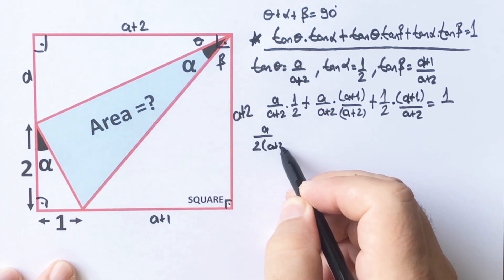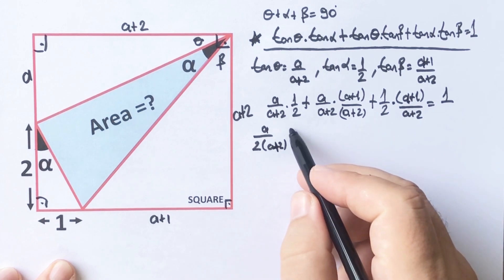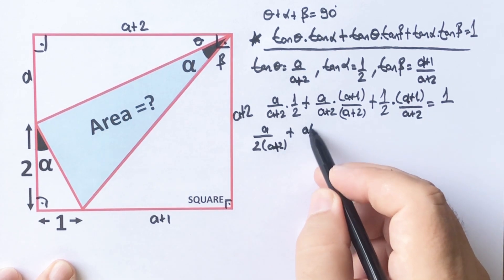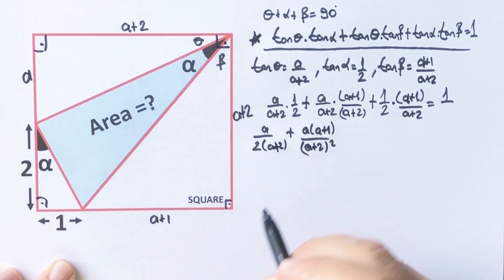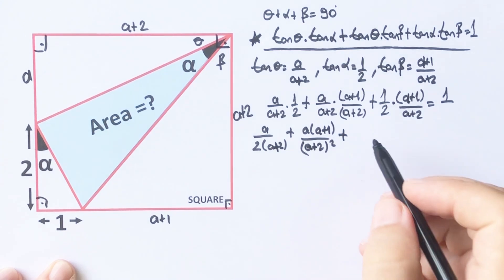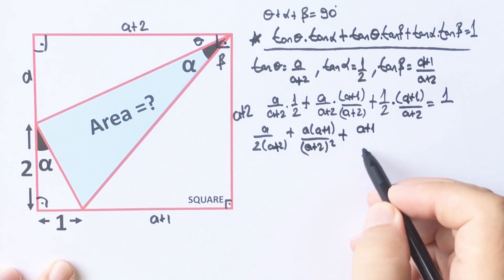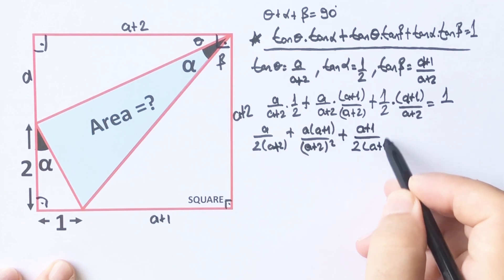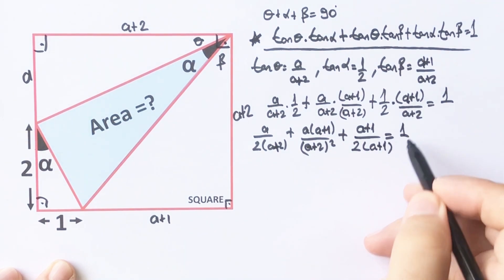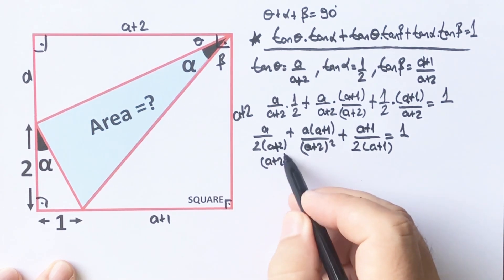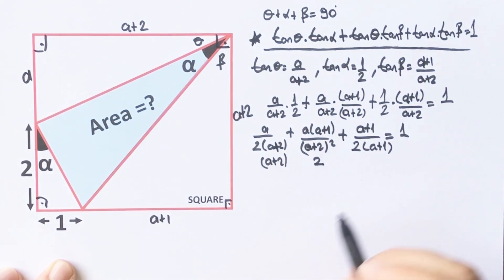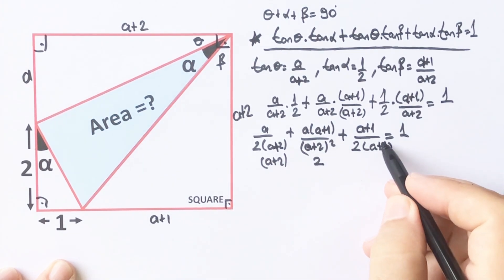If we organize the equations and equalize the denominators — sorry, I made a mistake here, it will be two units — we get: a times a plus two, plus two a times a plus one, plus a plus one times a plus two, over two times a plus two squared, equals one.